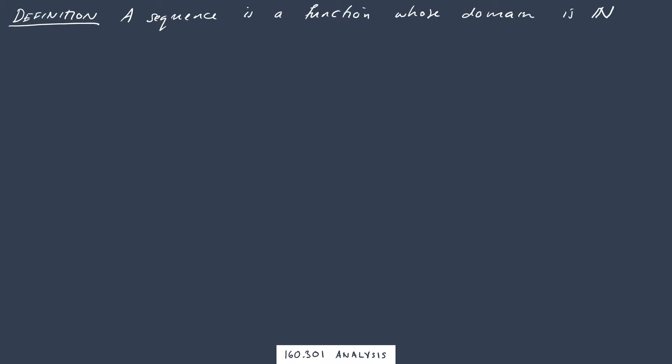So the definition of a sequence is actually pretty straightforward. We're saying that a sequence is basically just a function whose domain is the natural numbers. Remember the natural numbers n are just the counting numbers 1, 2, 3 and so on.